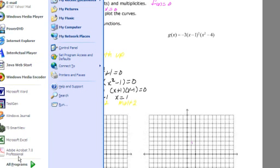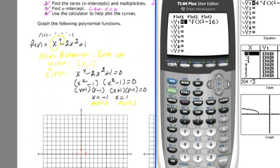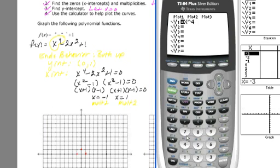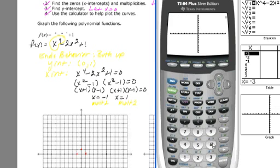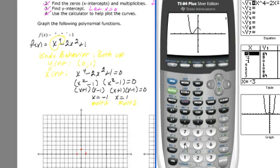Let's go to y equals, clear out what we have there, and let's type in x to the 4th minus 2x squared plus 1. And let's do that in Zoom 6 to get a decent picture of that. Oh, there's the picture of it.